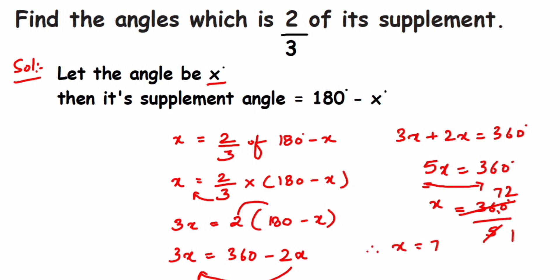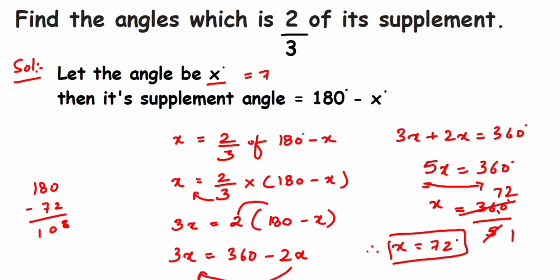So x equals 72 degrees. To find the supplement: 180 minus 72 equals 108 degrees. The original angle is 72 degrees and its supplement is 108 degrees. This was a simple question — I hope it's clear how we solved it. If you have any further questions or doubts, drop a comment below. Thank you for watching!